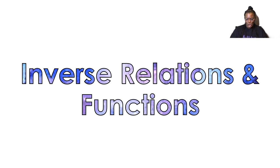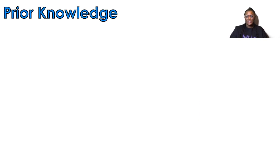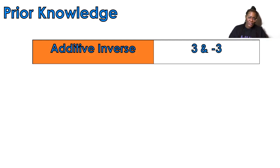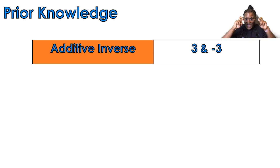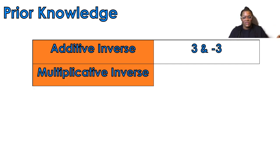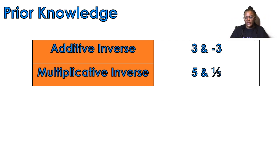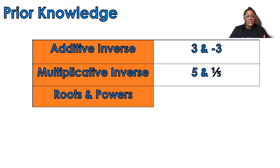The first thing we're going to do is talk about prior knowledge. When we're talking about inverses, you know what an additive inverse is — you may not know the term, but you know that positive three plus negative three makes zero; they cancel out. Multiplicative inverse: you know that five divided by five, or five multiplied by one-fifth, is the same thing. Five times one-fifth — that's the multiplicative inverse.